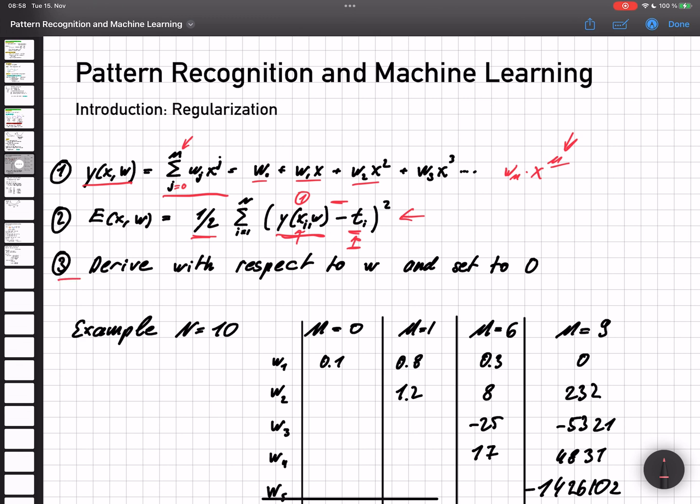And the third step of course is the derivation with respect to w. Set the derivatives to 0, get the local minima, hope that it's a global minima and then we're basically done.